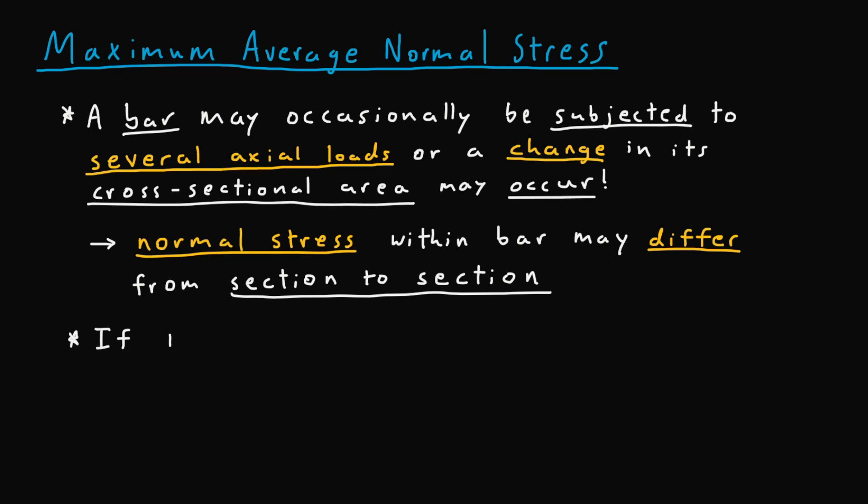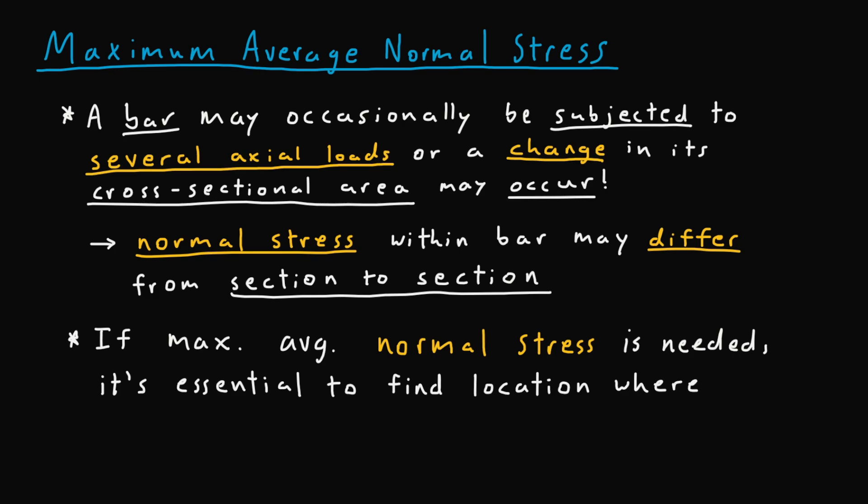If the maximum average normal stress is needed, then it is imperative to find a location where the ratio n over a is of course maximum. So this will of course require a slightly more complex analysis. But hopefully this procedure outlined here is generally intuitive enough to understand.